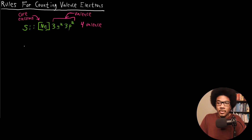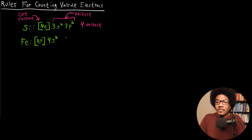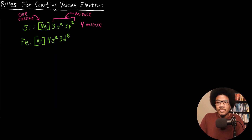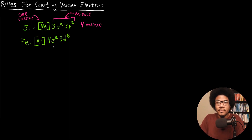Now let's do iron. Iron has the following electron configuration: argon as the core noble gas, and we have eight electrons outside of that — 4s2 and 3d6. This is where a little bit of confusion comes in for most students. Some students might accidentally say that iron only has two valence electrons because the outermost shell is the fourth shell, with two electrons in the 4s.